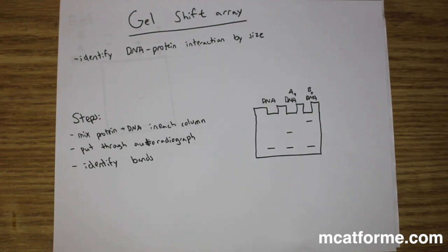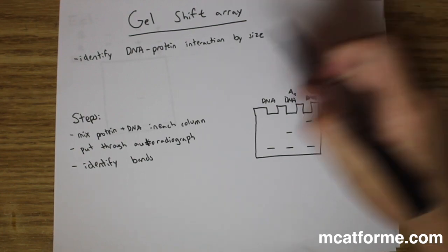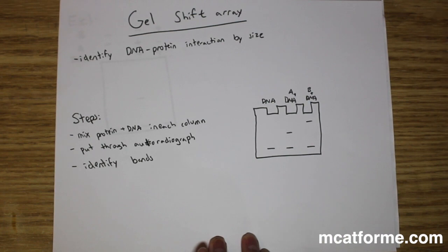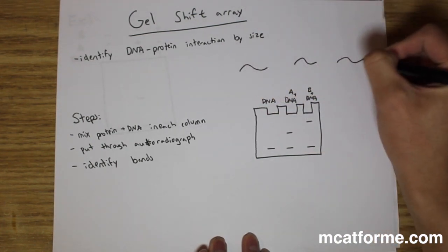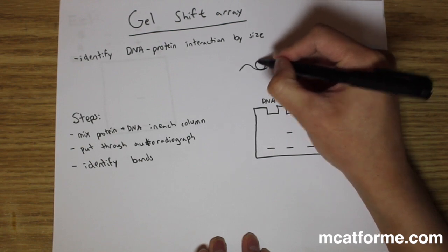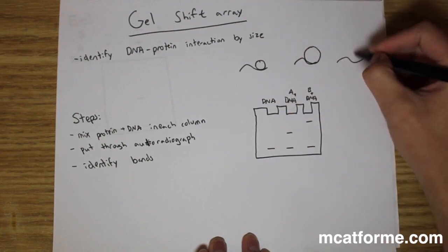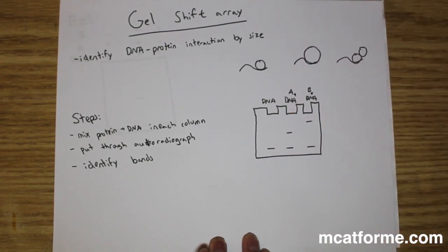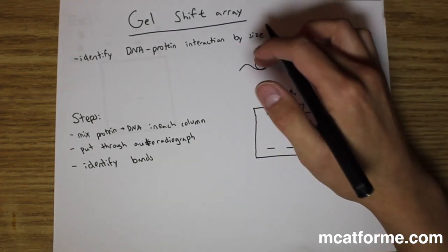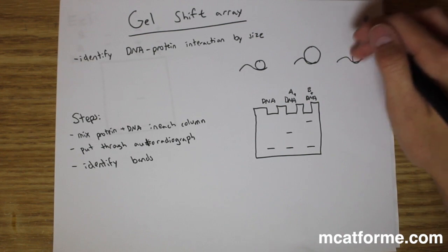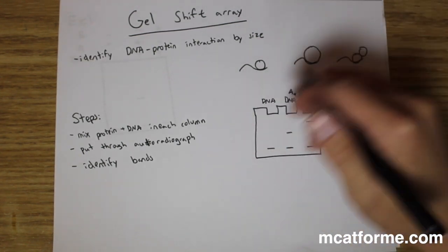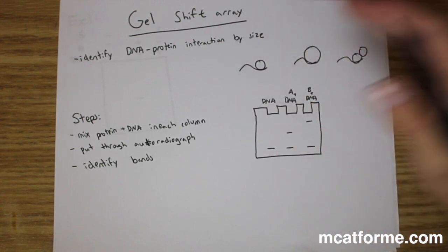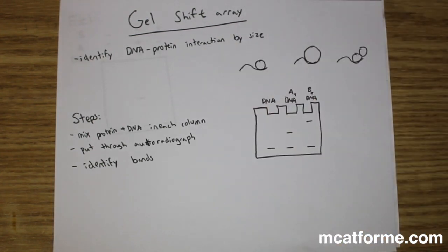The point of gel shift arrays is to identify DNA and protein interactions by size. If you have a bunch of different DNA molecules each binding different sized proteins — or maybe dimerized proteins — you want to know: does this DNA bind protein A, protein B, or a dimer of protein A and B? That's how we use gel shift arrays to figure out what this DNA binds to.